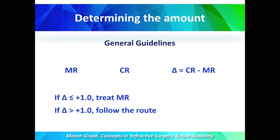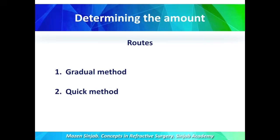Otherwise, you have to follow one of two routes. The first route is the gradual method, and the second route is the quick method. The gradual method is much more accurate, but it is more expensive, time-consuming, and many patients may disagree to go for it. The quick method is the most commonly used method in our daily practice.